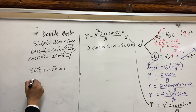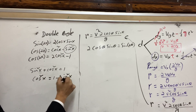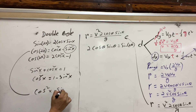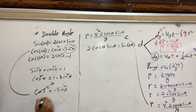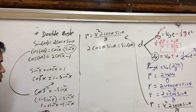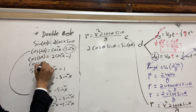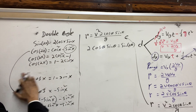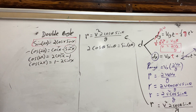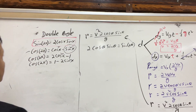One more form: since cosine²x equals 1 minus sine²x, substituting gives cosine 2x equals 1 minus 2·sine²x. So you don't have to memorize any formula — you can derive them. But for the range equation, we're only going to use the first one: sine 2x equals 2·cosine x·sine x.